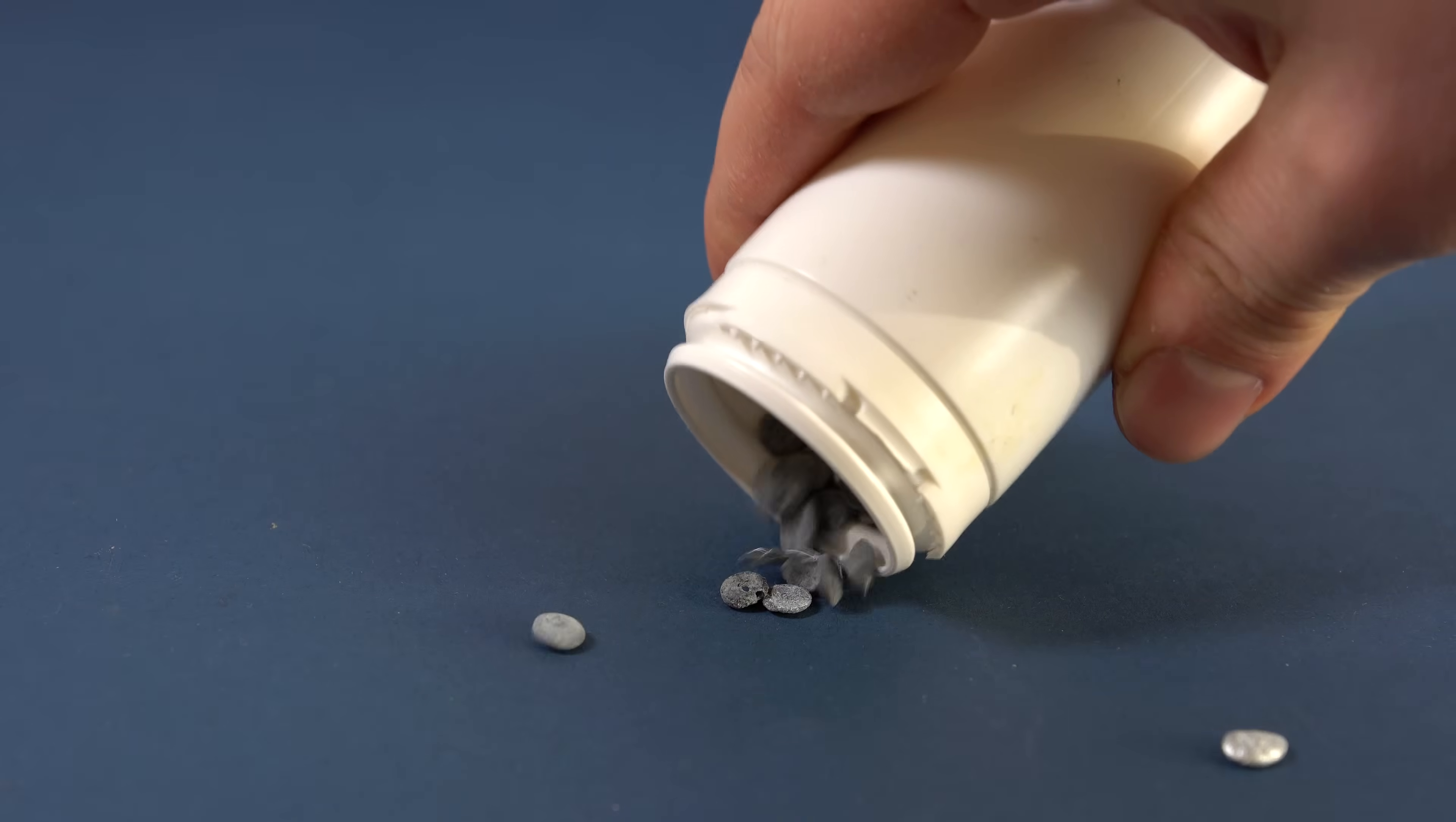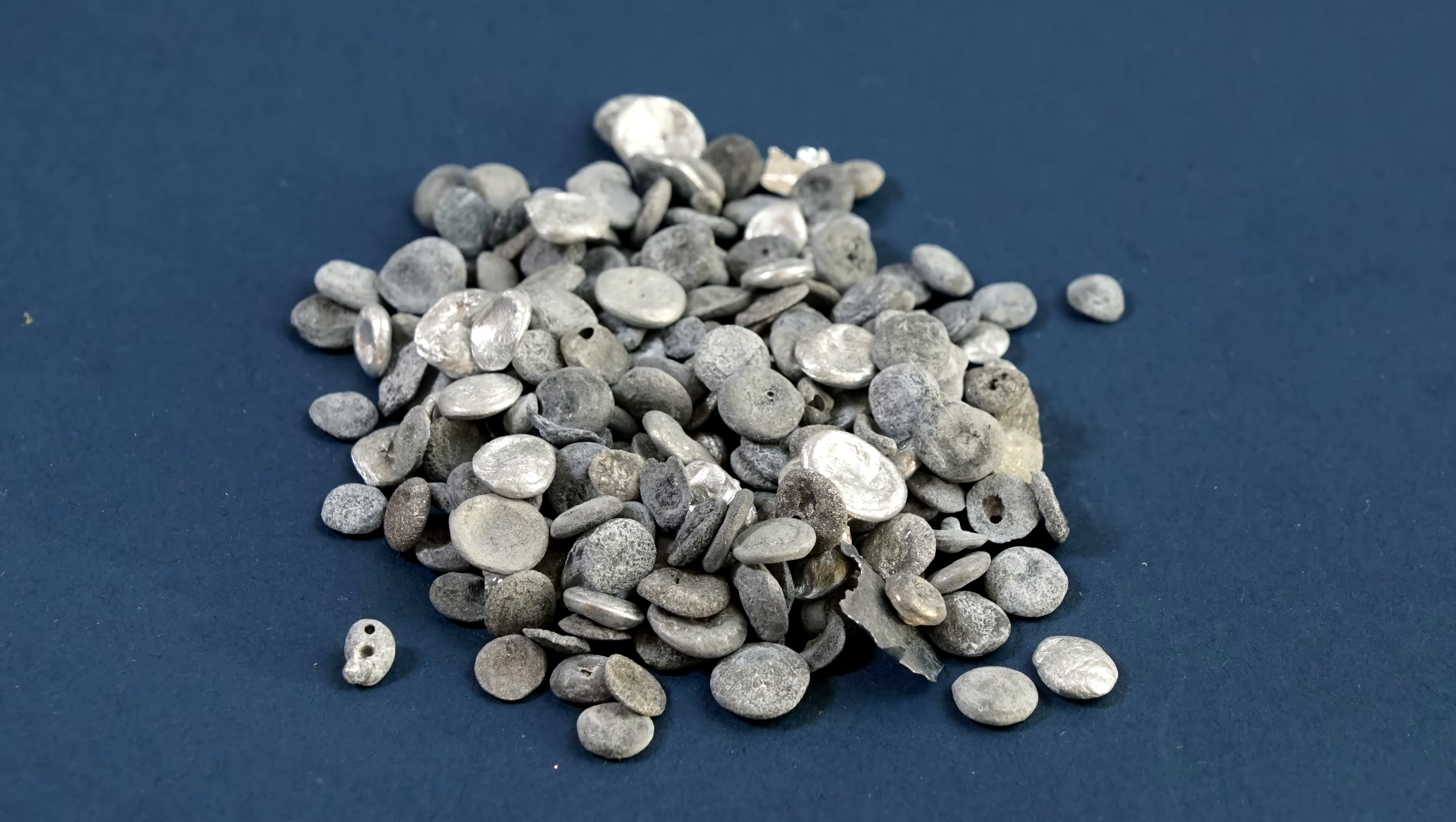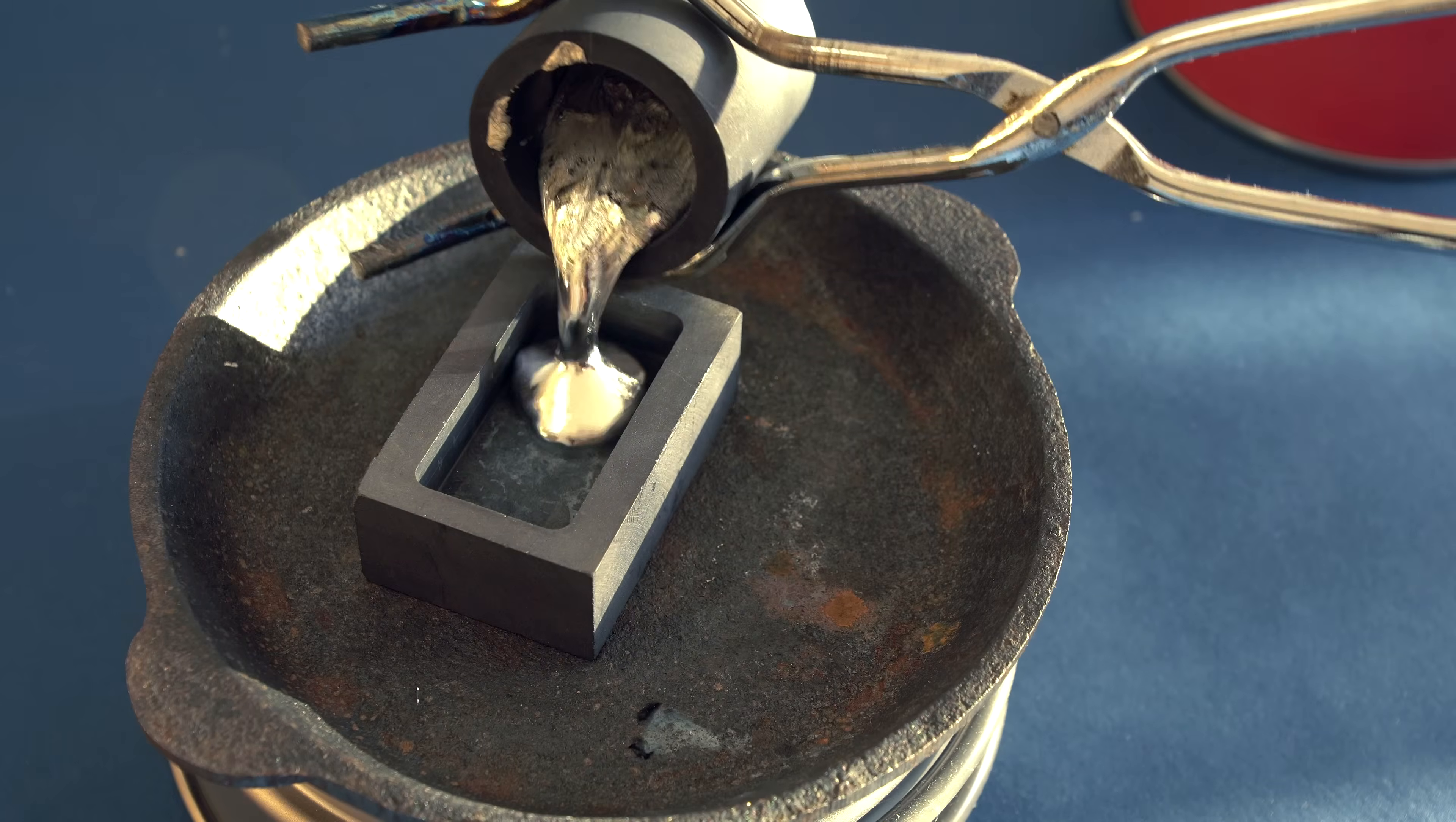Zinc obtained through electrolysis is quite pure. My zinc was granulated. Granulated zinc is quite easy to melt down because the melting point of zinc is just 419 degrees Celsius.